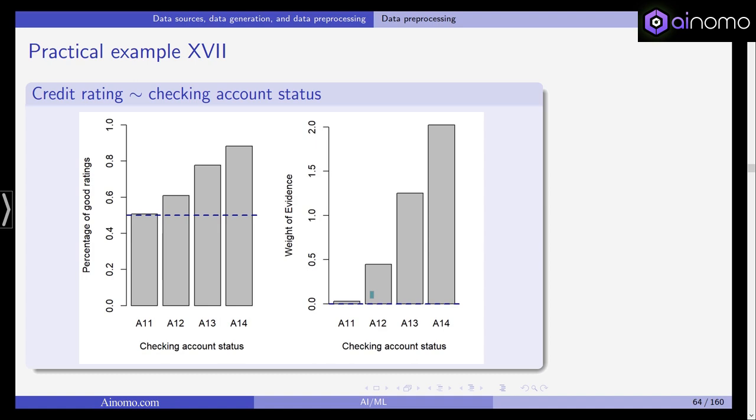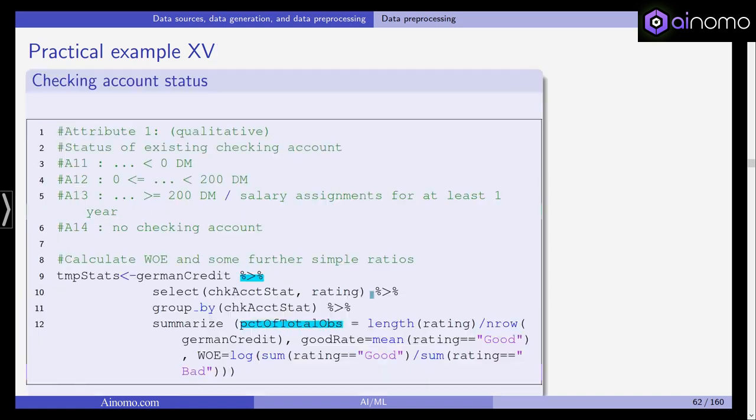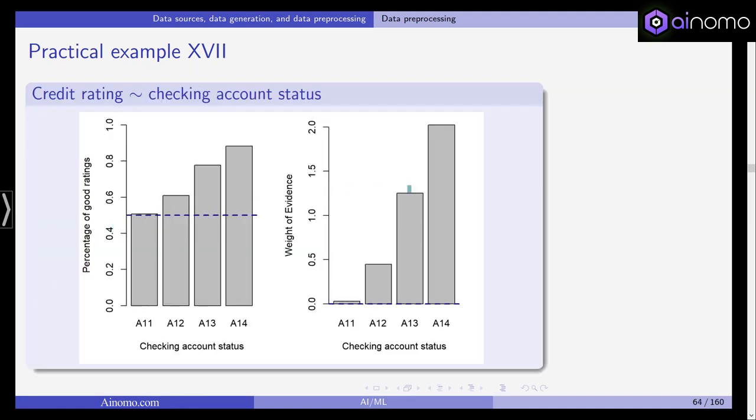If you look at the weight of evidence, you will see that the first level has almost no predictive power, whereas the fourth level, which is no checking account, seems to be highly predictive of a bad credit level. The weight of evidence shows this more clearly than the percentage of good ratings. The third and fourth levels predict a bad credit rating quite well.